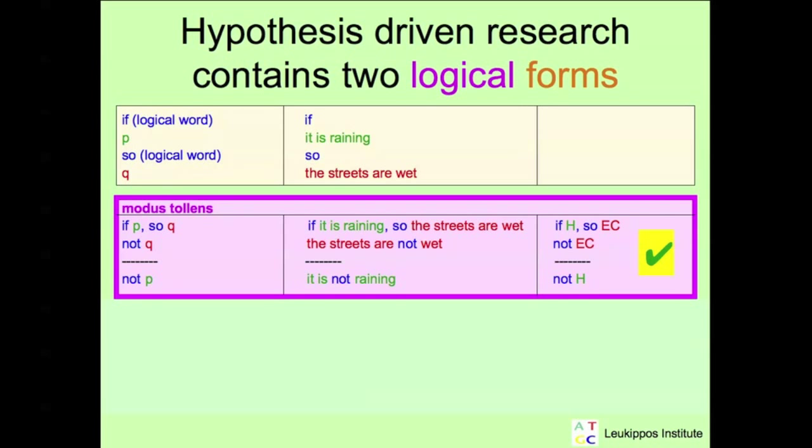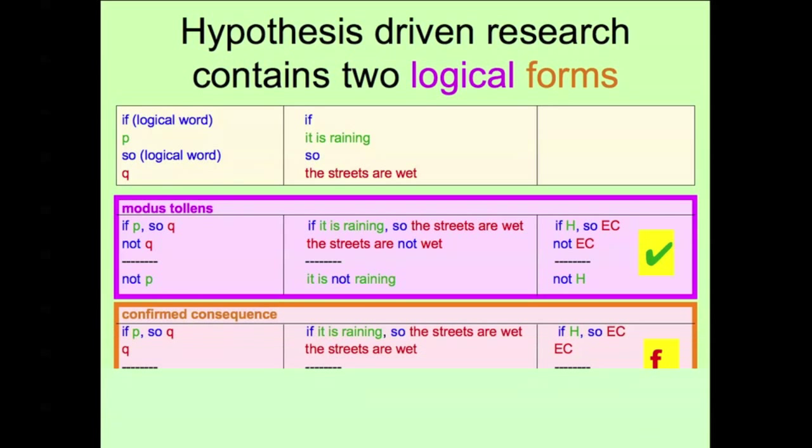The second logical form is called confirmed consequence. If P, so Q. We observe Q and conclude that P is correct. This conclusion is false, as we will see in our example. We know if it is raining, so the streets are wet. We observe that the streets are wet and conclude that it is raining.